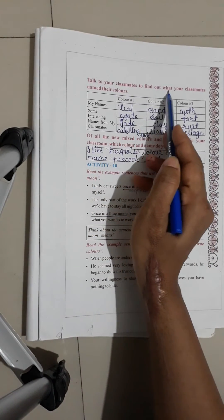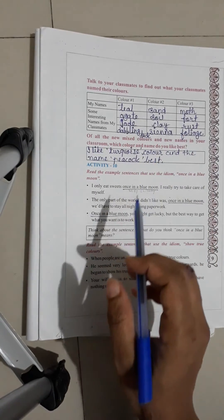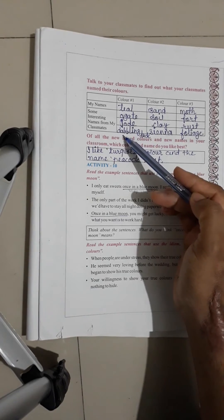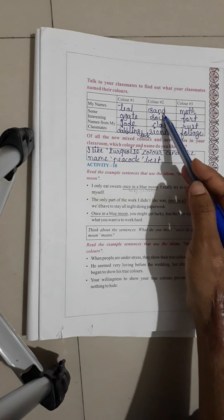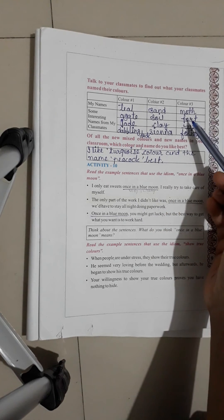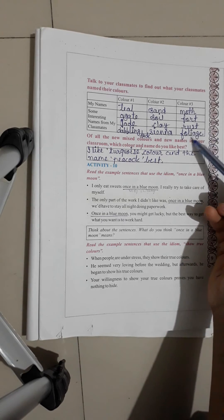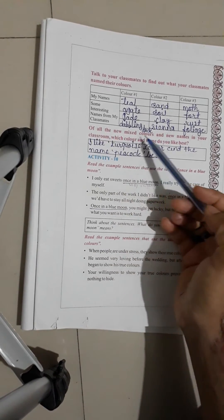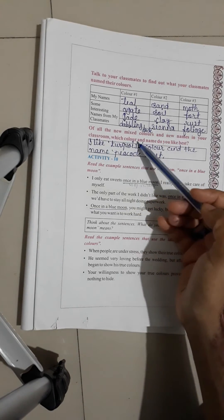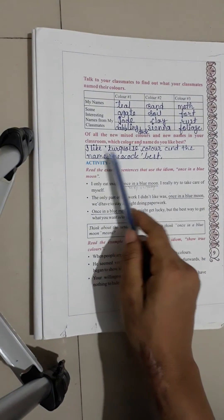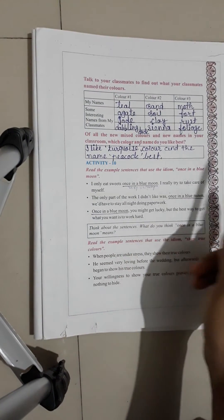Talk to your classmates to find out what your classmates named their colors. Sand, soil, clay. Of all the new mixed colors and new names in your classroom, which color and name do you like best? I like turquoise. I like the color and the name peacock best.